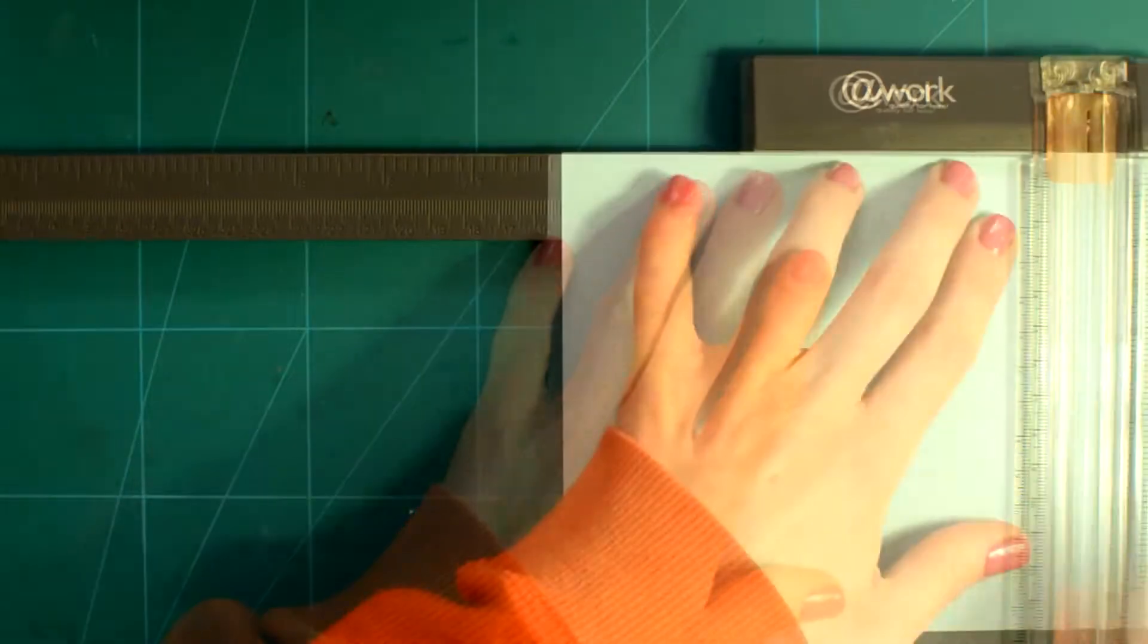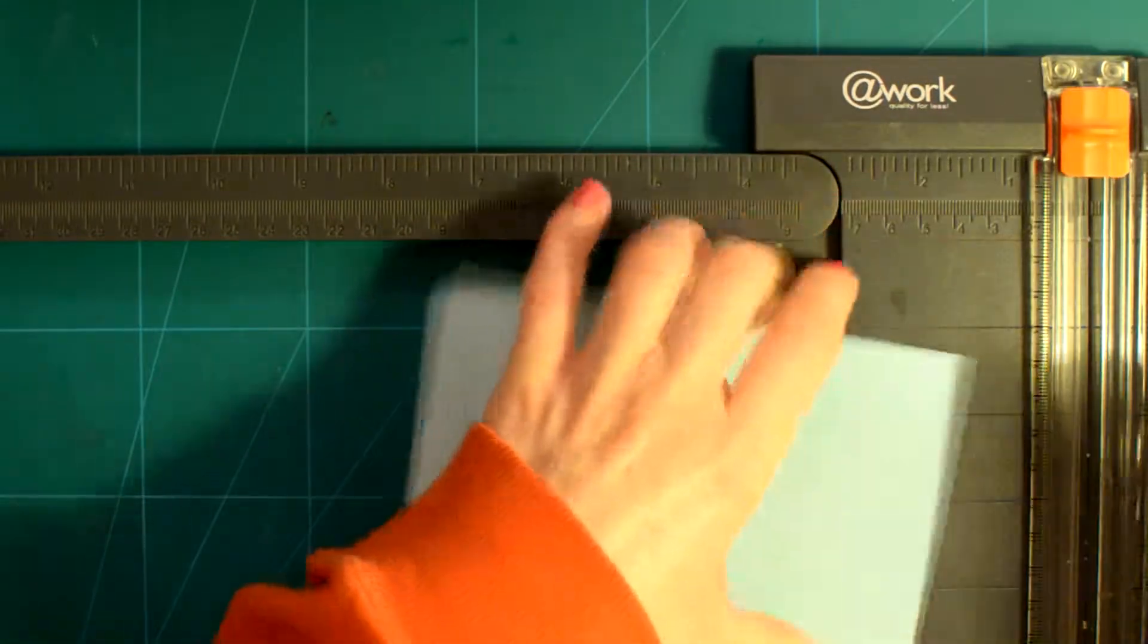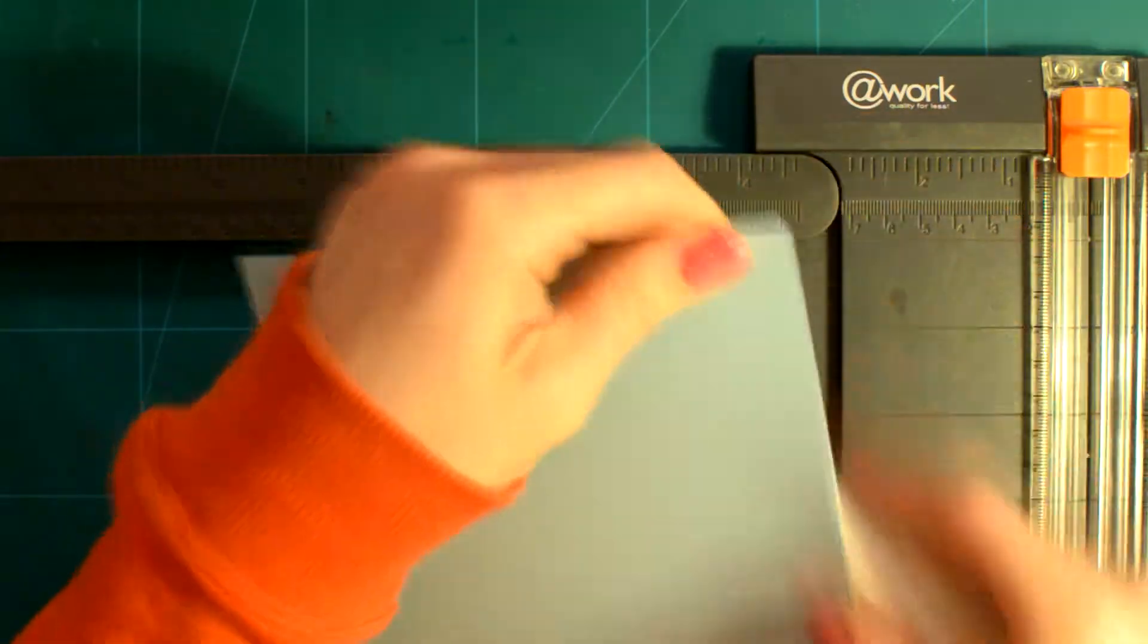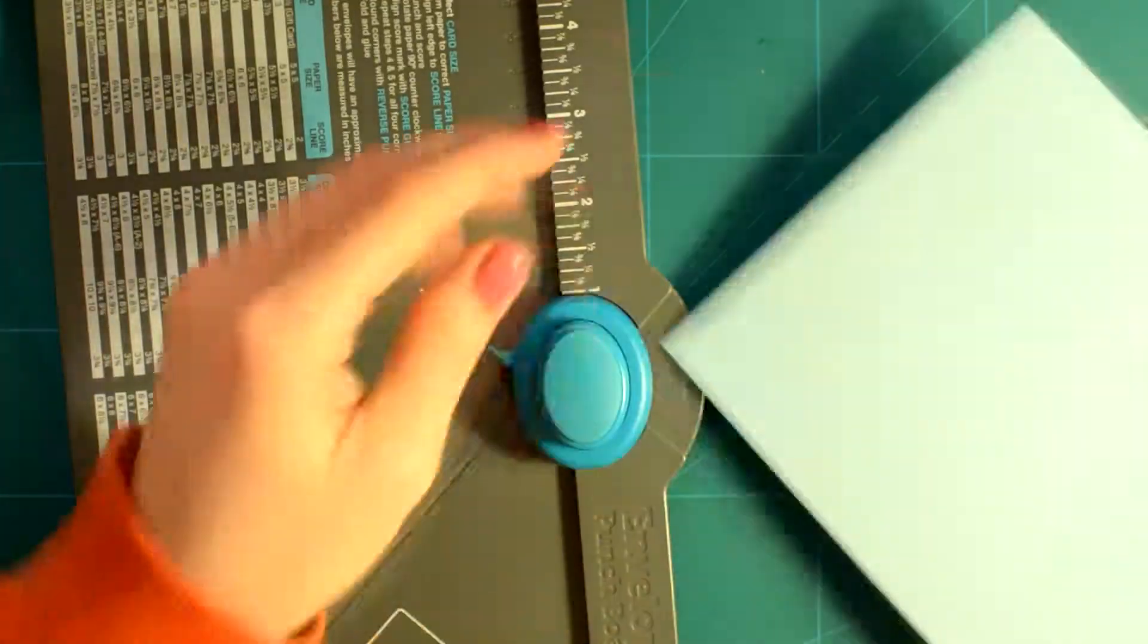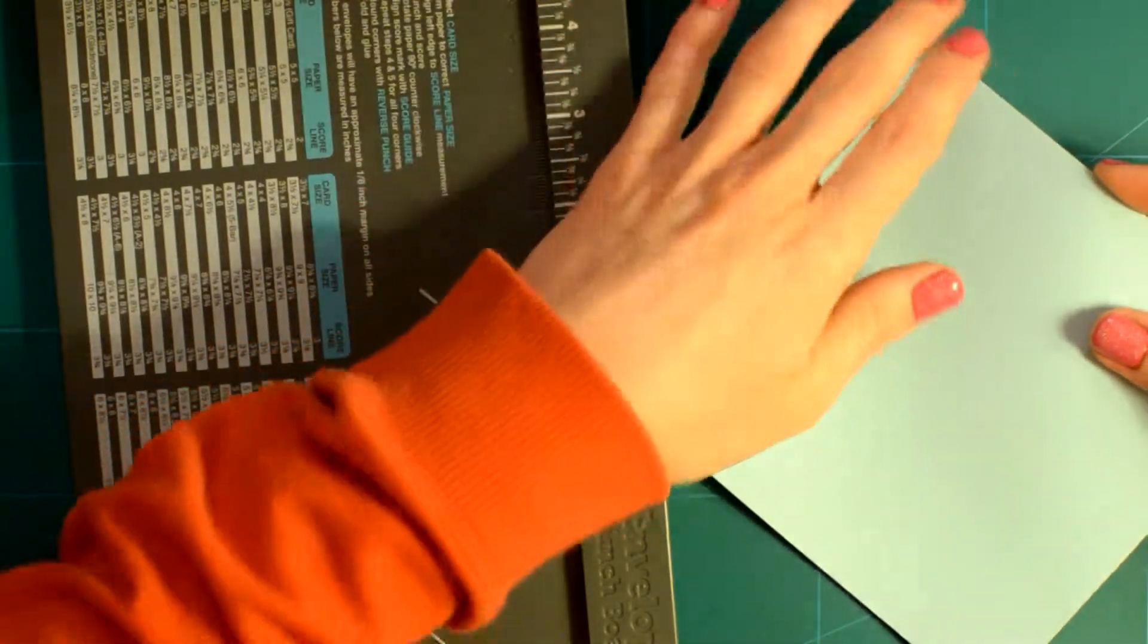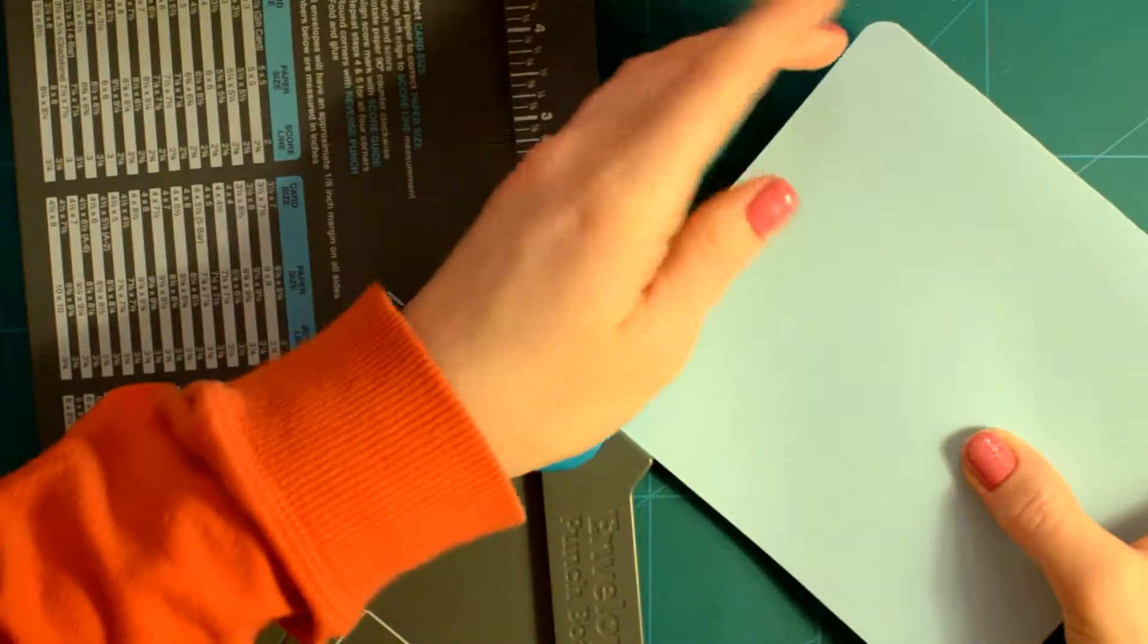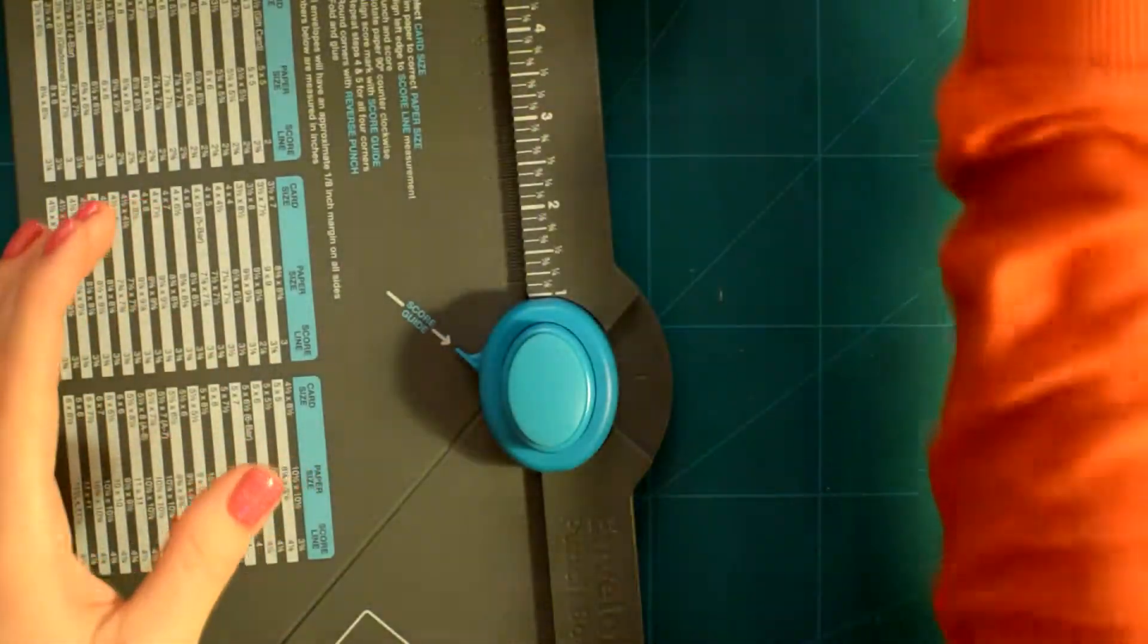I will have links for all the supplies in the description box even though I am not sure if this DSP is still available, but you can always add one of your liking. I sanded the edges and rounded the corners with the corner rounder in the envelope punch board.